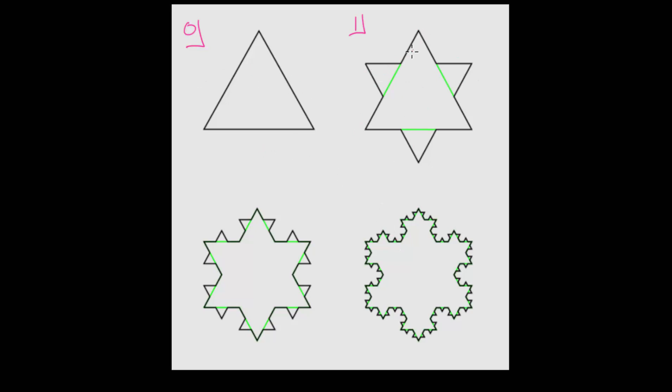From here, we will just repeat that same process. Each of these side lengths will then be split into three pieces, and an equilateral triangle will replace that middle piece. We'll do that for each of these side lengths.